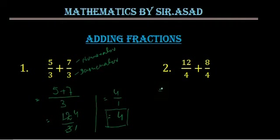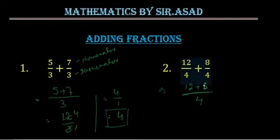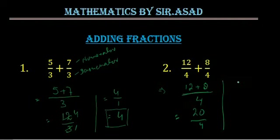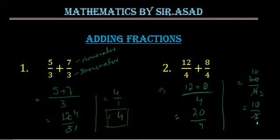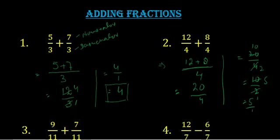Similarly in question number 2, the denominator is the same, so we write it one time. The denominator is 4, and the numerators are 12 plus 8. So it becomes 20 upon 4. We can divide 20 upon 4 by 4, or we can divide by 2. Dividing both by 2 gives 10 upon 2, and dividing again by 2 gives 5 upon 1. So the answer is 5 — when we add these 2 fractions, the answer becomes 5.